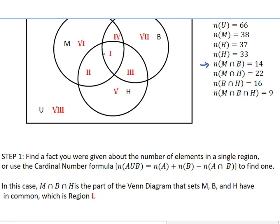includes both region 1 and region 4. So that's not a single region. So instead, look at this intersection of all three, M intersect B intersect H. That's where all three of the circles overlap. That is a single region. That's region 1. So in this case, M intersect B intersect H tells us how many are in region 1. So that's where we're going to start.